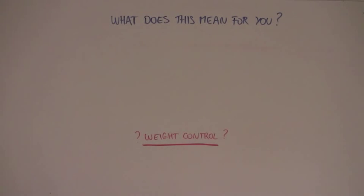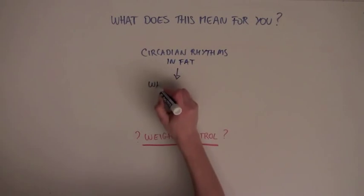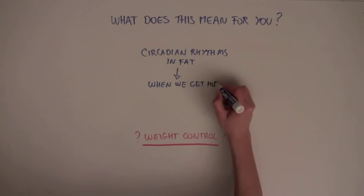As we try to understand how weight is controlled, this study shows that it's also important to consider circadian rhythms in the fat tissue that can control when we get hungry.